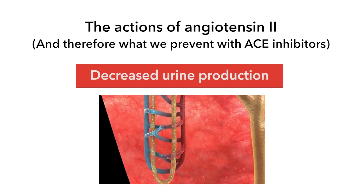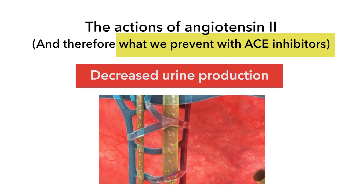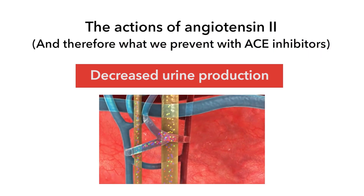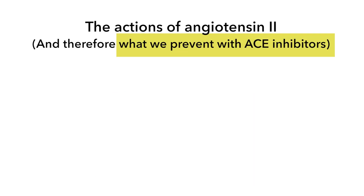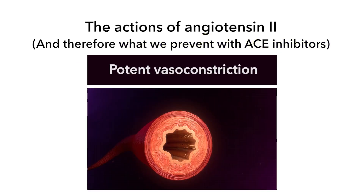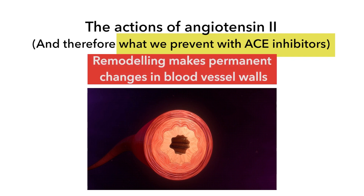The actions of angiotensin II — and therefore what we block with our ACE inhibitors — are, firstly, angiotensin II directly stimulates the kidneys to hold or keep more water. Secondly, angiotensin II binds to epithelial cells across the body, yielding direct constriction of the blood vessels. It is a very potent vasoconstrictor, and eventually that constriction leads to a lot of the permanent remodeling changes that occur in blood vessel walls.